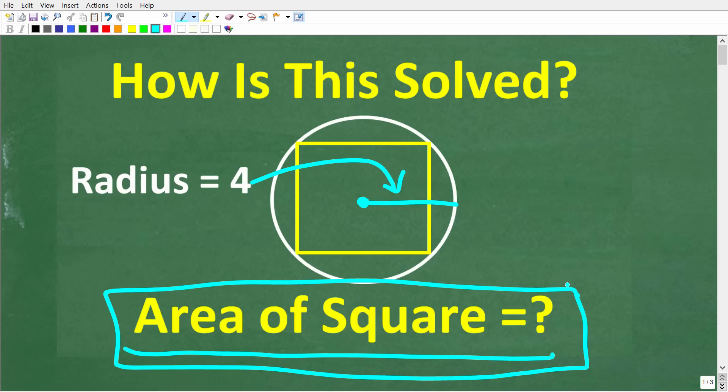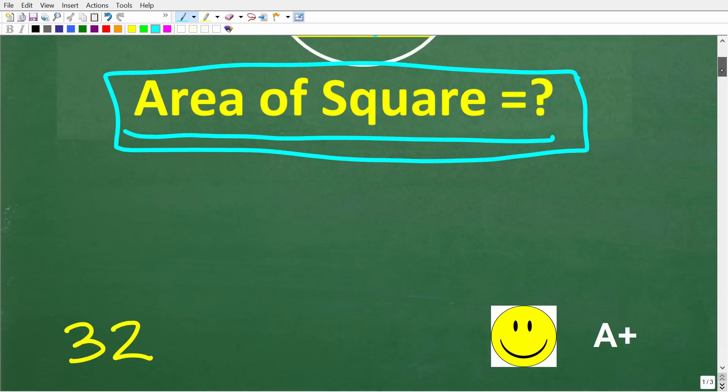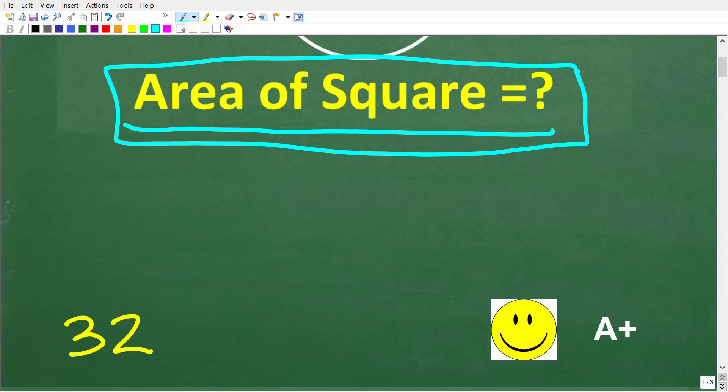This particular problem I think is going to challenge a lot of people, but when you see the solution you're going to be wow, that is actually not too difficult. The area of this square inside of this circle that has a radius of 4 is 32 units squared. If you got this right, you definitely get a happy face and an A++. That is fantastic.